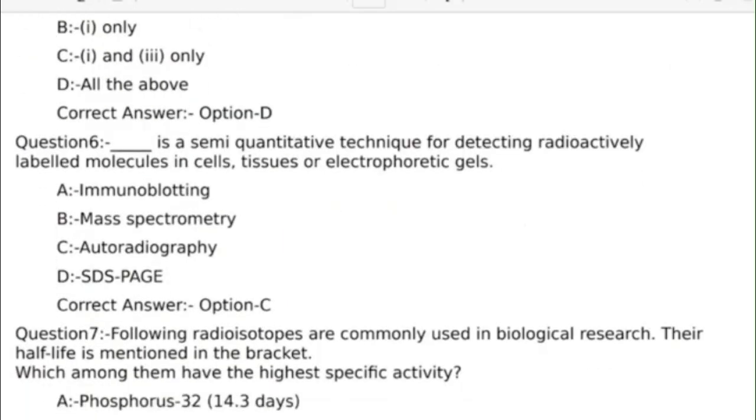Sixth question: This is a semi-quantitative technique for detecting radioactively labelled molecules in cells, tissues or electrophoretic gels. Answer options: Option A, Immunoblotting; Option B, Mass Spectroscopy; Option C, Autoradiography; Option D, SDS page. Correct answer: Option C, Autoradiography.